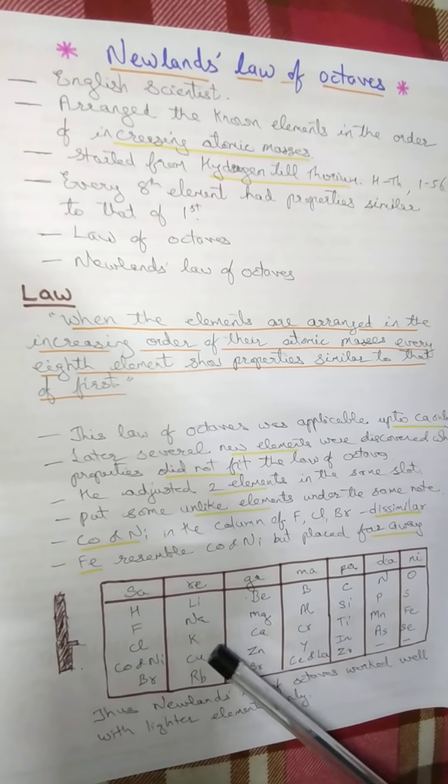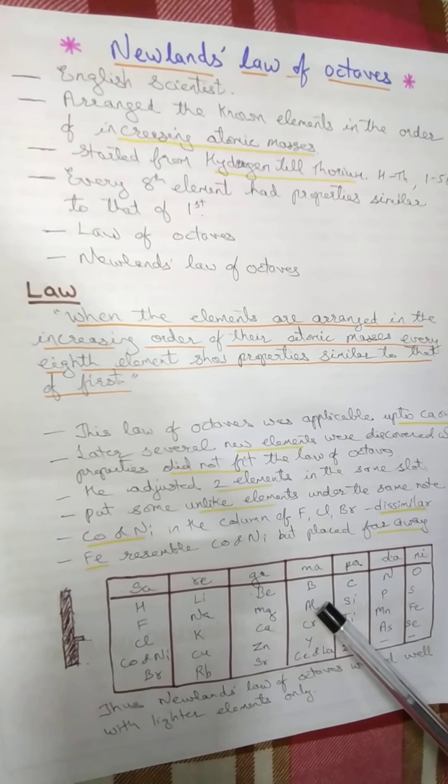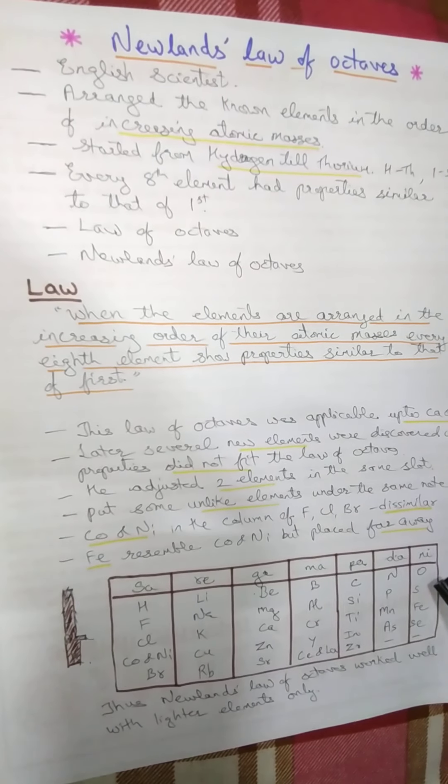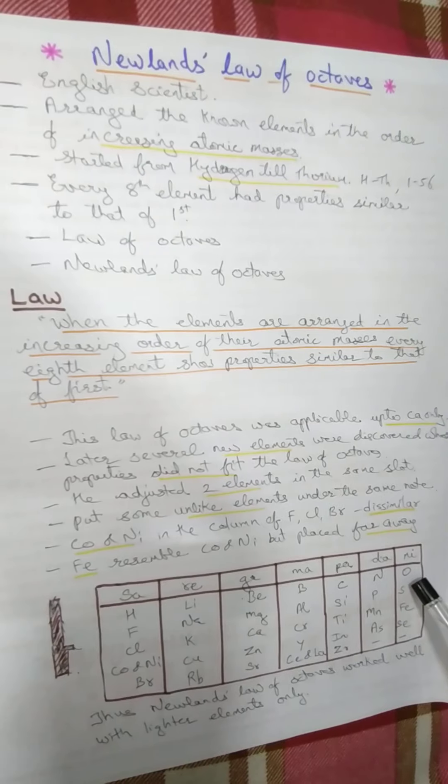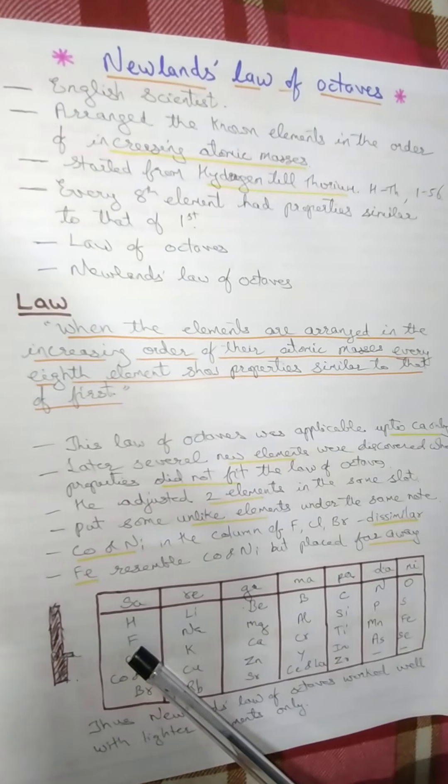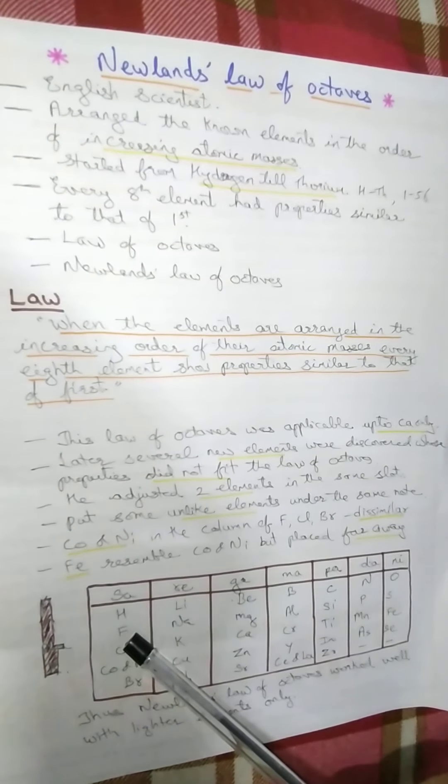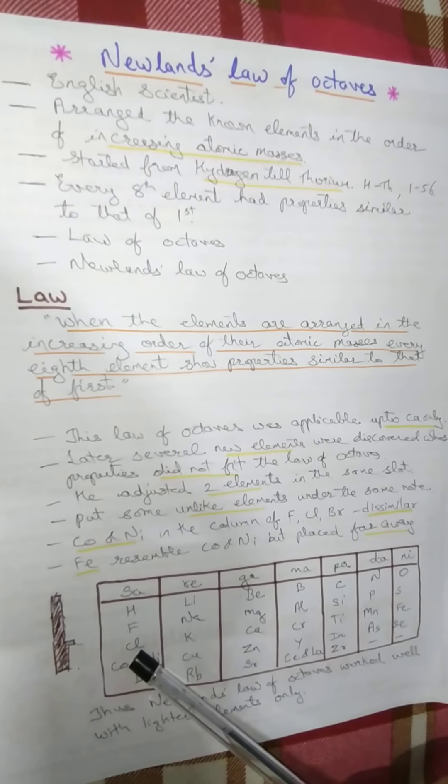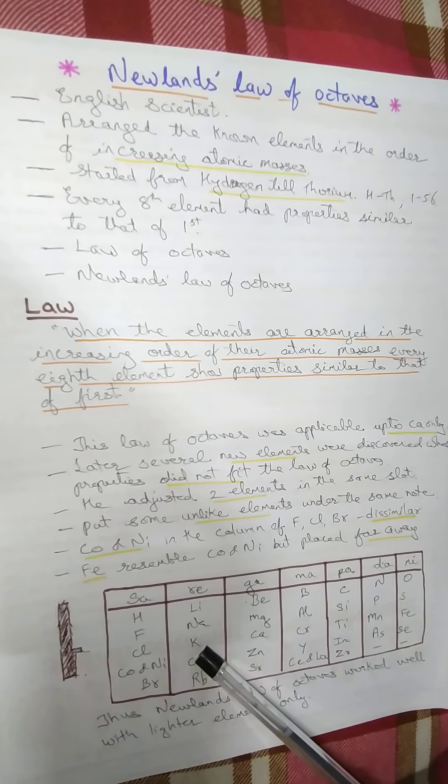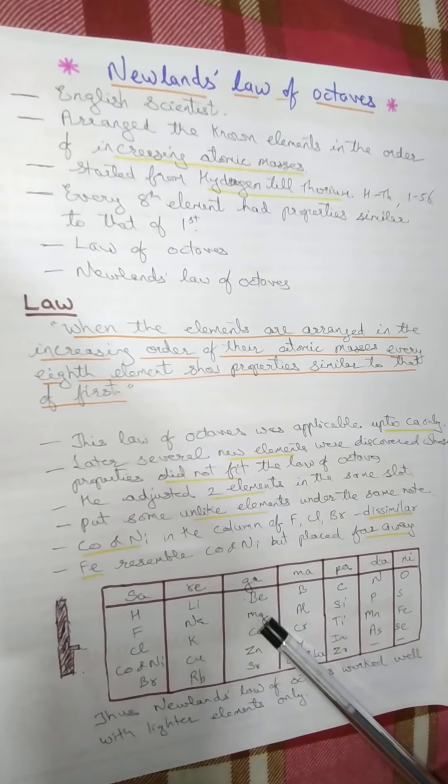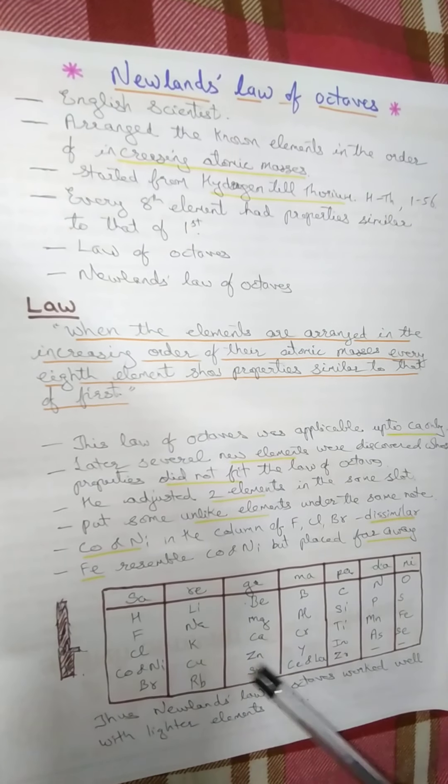Now, hydrogen, lithium, beryllium, boron, carbon, nitrogen, oxygen. These are arranged in the increasing order of the atomic masses. Next is fluorine, that is hydrogen and fluorine show similar properties, and then chlorine shows similar properties. In the same way, lithium, sodium, potassium have similar properties. Beryllium, magnesium, calcium have similar properties and so on.